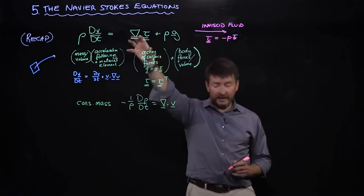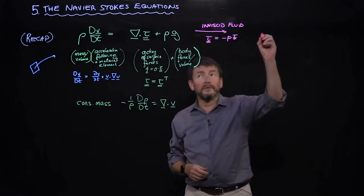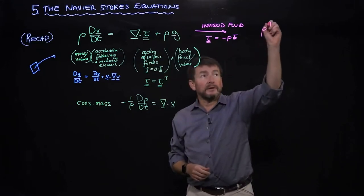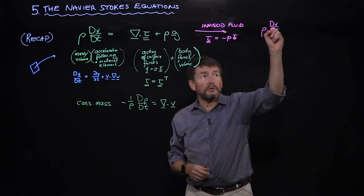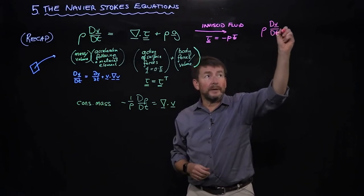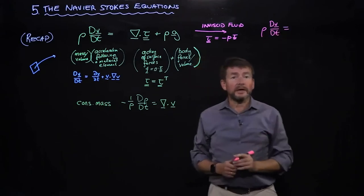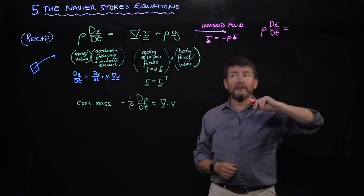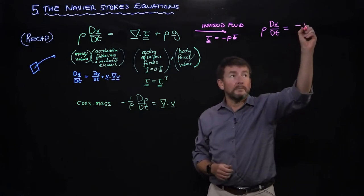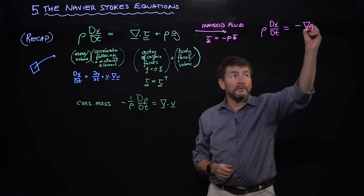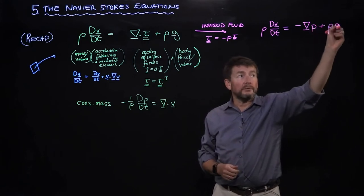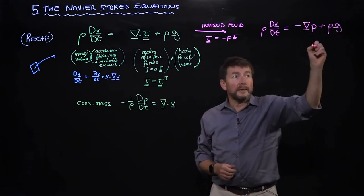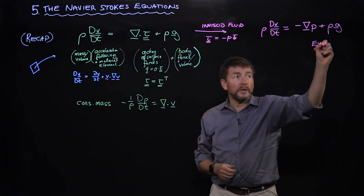If I substitute this into here, my equation becomes the mass per volume times the acceleration equals minus gradient of the pressure plus the body force per unit volume. This was the Euler equation.